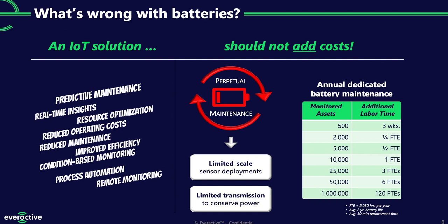Sensors also have to ration transmissions to extend battery life, so instead of continuous insights you might get a reading a couple times an hour or a couple times a day. If you wanted a million data points across a plant — not unreasonable given all the process points that need monitoring — running that off battery-powered sensors alone could require 120 full-time employees just changing batteries. That's simply not happening in customer environments.